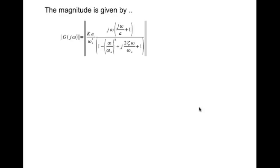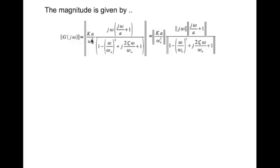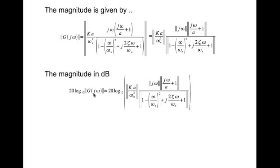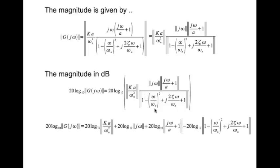The magnitude of this transfer function is given by the magnitude of the entire thing, which ends up being the magnitude of the individual complex numbers multiplied and divided. Now let's look at the magnitude in decibels. To get the magnitude in decibels, you take 20 log base 10 on both sides. With logarithms, numbers that are multiplied become additions and numbers that are divided become subtractions. So the magnitude of the transfer function in decibels is the sum of the magnitudes of various factors in decibels.